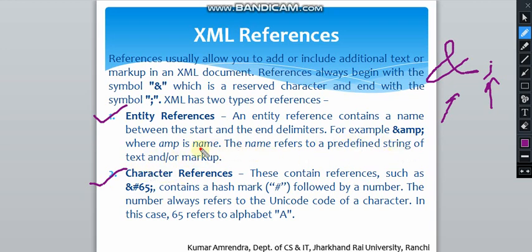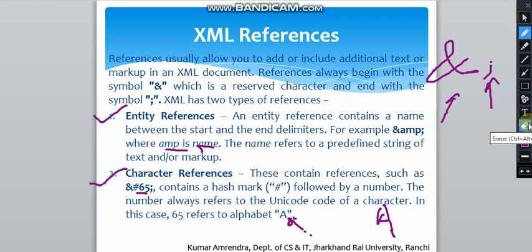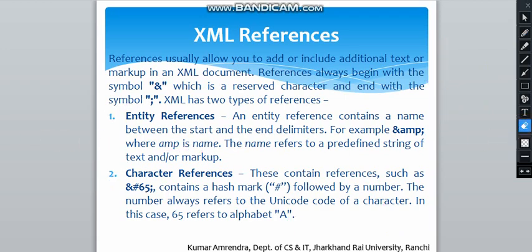For example, '&amp;' where 'amp' is the name, and the name refers to a predefined string of text or markup. The second type is character reference, which contains references such as '&#65;'. The hash symbol is followed by a number, and that number always refers to the Unicode code of a character. In this case, 65 refers to the alphabet 'A'.